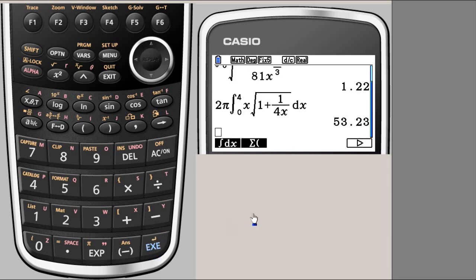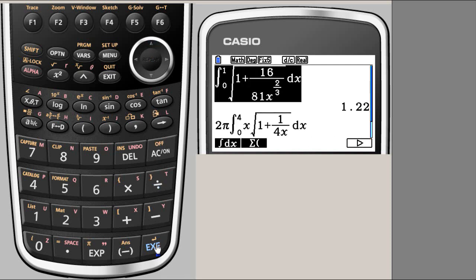If we go here and execute this again, we should get more digits. There it is, five digits. Same thing with the previous calculation. We say execute and you get more digits.